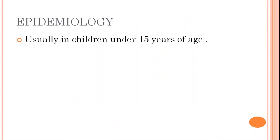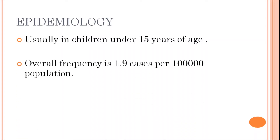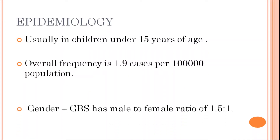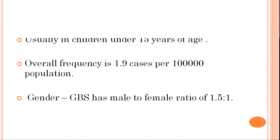Now, the epidemiology of GBS: usually it occurs in children under 15 years of age. Overall frequency is 1.9 cases per 100,000 population. In gender, male is more affected as compared to female, so the male-to-female ratio is 1.5 to 1.